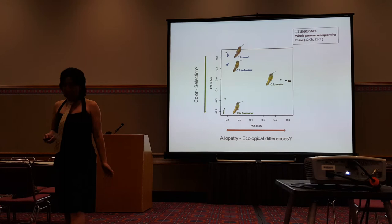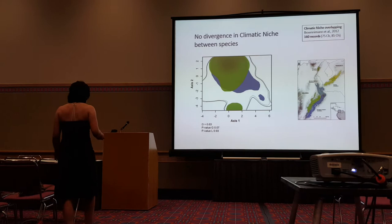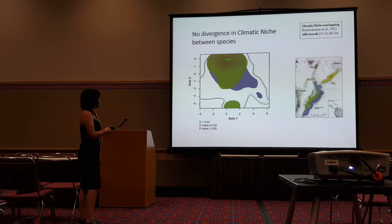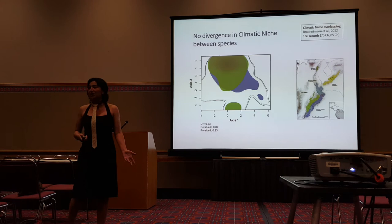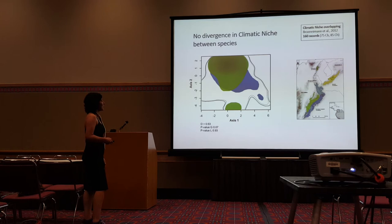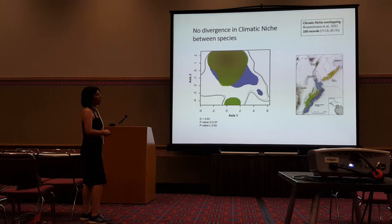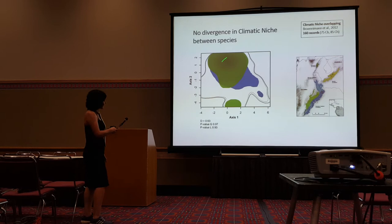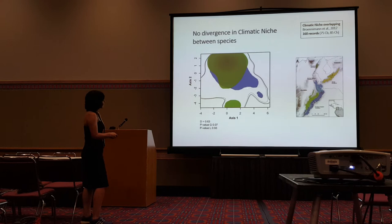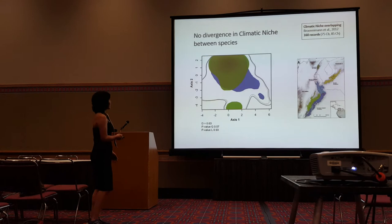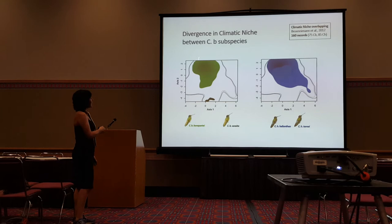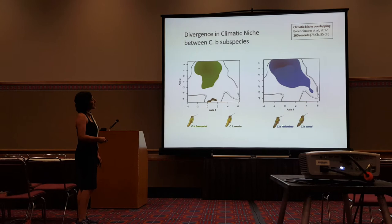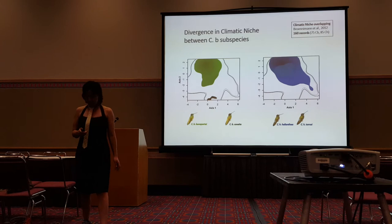We did a climatic niche overlap analysis for CB and CH. What you see is that they are occupying the same climatic niche — they are not different in the climatic conditions they experience. But it seems like each subspecies occupies different climatic conditions: CB has one profile and CH another. When we test this at the subspecies level, we find that Concita and Bonaparte are effectively using different climatic conditions, while Tamai and Hilianta are using pretty much the same.